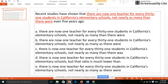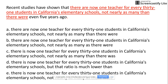Hello friends, I'm Hassan Raja and I'm back with one more sentence correction question. It says: 'Recent studies have shown that there are now one teacher for every 31 students in California's elementary schools, not nearly as many than there were even five years ago.'